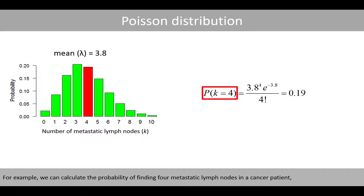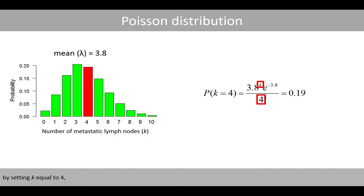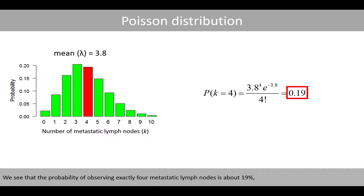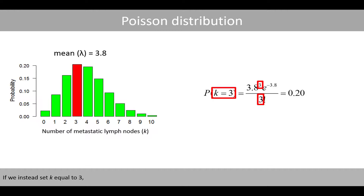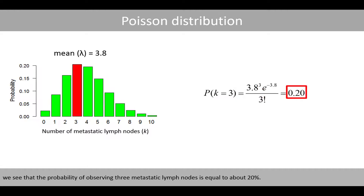For example, we can calculate the probability of finding 4 metastatic lymph nodes in a cancer patient by setting k equal to 4 and lambda to 3.8. We see that the probability of observing exactly 4 metastatic lymph nodes is about 19%, which corresponds to the height of this bar. If we instead set k equal to 3, we see that the probability of observing three metastatic lymph nodes is equal to about 20%.